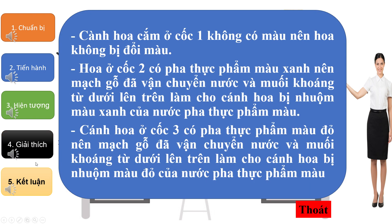Cánh hoa cắm ở cốc 1 không có màu nên hoa không bị đổi màu. Hoa ở cốc 2 có pha thực phẩm màu xanh nên mạch gỗ đã vận chuyển nước và muối khoáng từ dưới lên trên làm cho cánh hoa bị nhuộm màu xanh của nước pha thực phẩm màu.